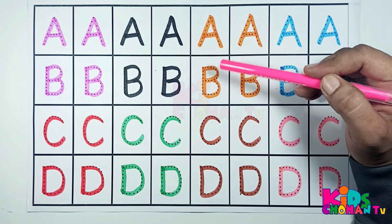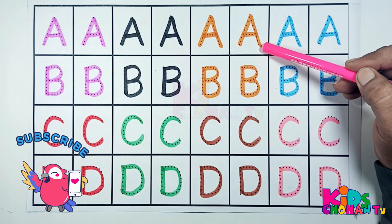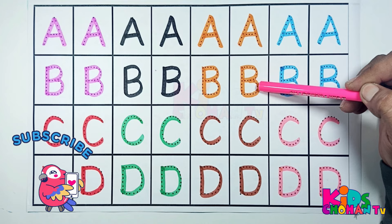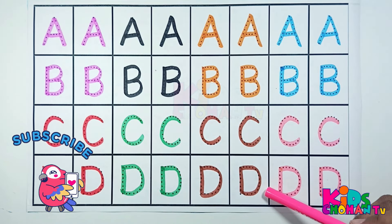A, B, C, D. A for aeroplane, B for butterfly, C for cat, D for dinosaur.